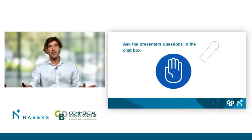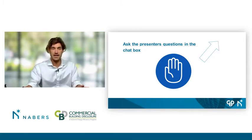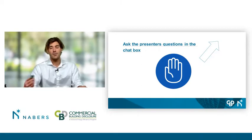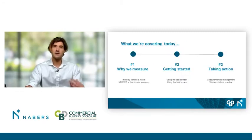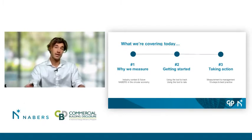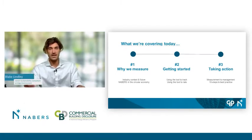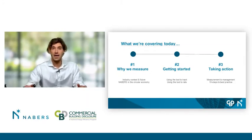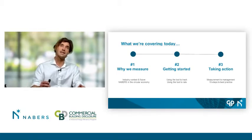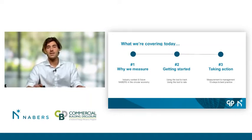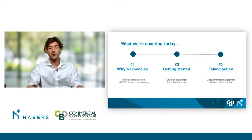So what we're covering today — three distinct components. The first is why we measure: I want to give you an understanding of where neighbours' waste sits in the scope of carbon emissions and the circular economy transition nationally. Secondly, getting started — practical nuts and bolts on how you track, rate, and use that tool to achieve the outcomes you need. Thirdly, taking action: translating measurement into management, looking at what tools are available and who you can turn to for best practice.